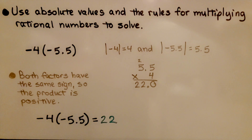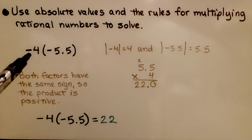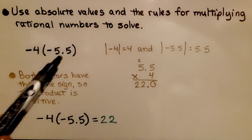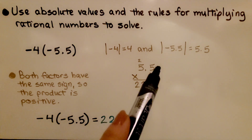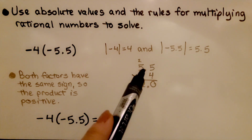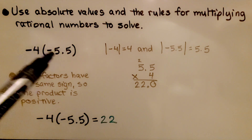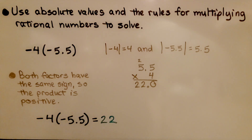Let's try that again using absolute values and the rules for multiplying rational numbers. We have negative 4 times negative 5 and 5 tenths. We multiply 4 times 5.5, ignoring the signs, and get 22. Remember: however many decimal hops are in the problem, that many decimal hops are in the answer — one decimal hop here gives one in the product. Both factors have the same sign, so the product is positive 22.